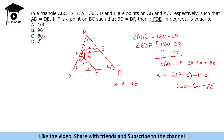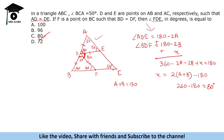Another approach: assume specific values. Take A = 60° and B = 70°. Then angle ADE = 60°, angle BDF = 40°, and the remaining angle FDE = 180 - 60 - 40 = 80°. To cross-check, try A = 50° and B = 80°: angle ADE = 80°, angle BDF = 20°, giving FDE = 80° again. Consistently getting 80°, so the answer is confirmed as 80 degrees.